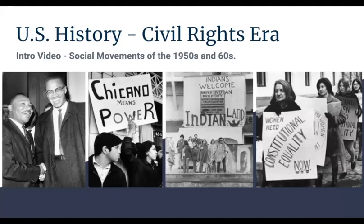You see some of the photos here. On the left, you've got Martin Luther King Jr. and Malcolm X, two of the most prominent civil rights leaders of the 1950s and 60s. Next to them, you have a picture from the Chicano movement, primarily made up of Mexican-American youth protesting for their rights. Next to that, you've got a picture from the American Indian movement, where they occupied Alcatraz Island. And finally, you have pictures from the feminist movement, also in the 1960s and 1970s. These activities will give you the opportunity to study all four of these movements.